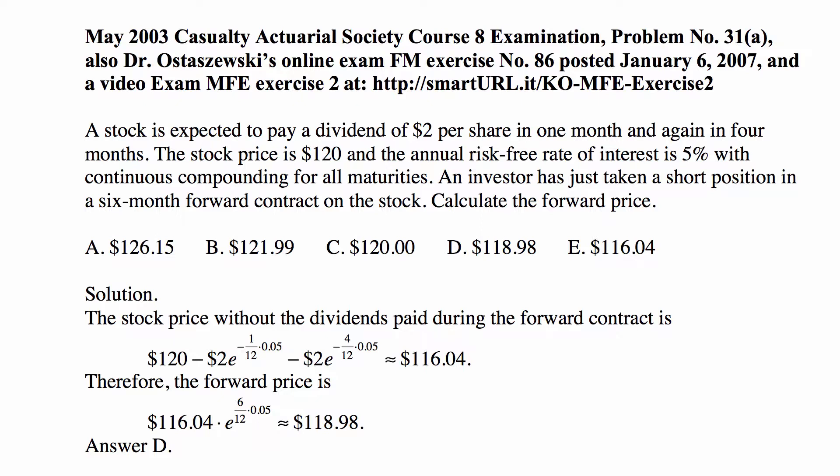So we have the following story. A stock is expected to pay a dividend of $2 per share in one month, and again in four months. The stock price is $120, and the annual risk-free rate of interest is 5%, with continuous compounding for all maturities. An investor has just taken a short position in a six-month forward contract on the stock. Calculate the forward price.